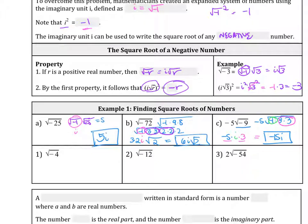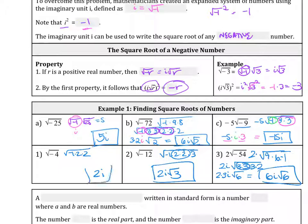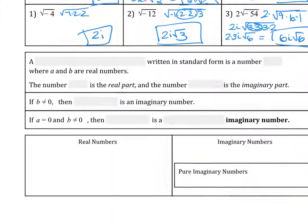Try out these three practice problems. For number 1 you should get 2I — that's just square root of negative 1 times 2 times 2. For number 2 you get 2I root 3, from negative 1 times 2 times 2 times 3. For number 3 you have 2 times square root of 9 times 6 times negative 1, which simplifies to 6I root 6.